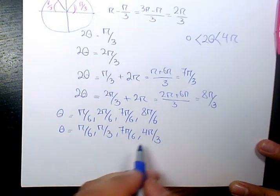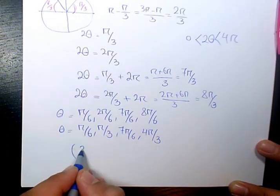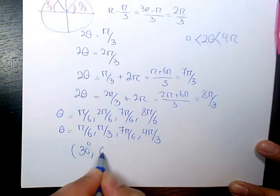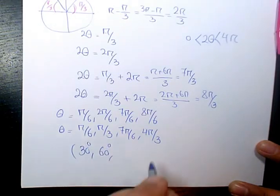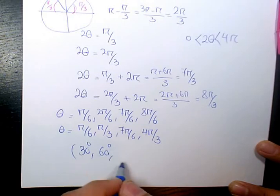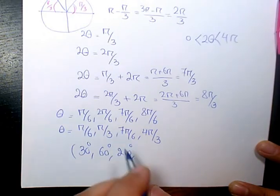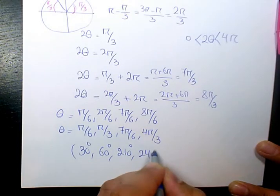So these are the answers in terms of radian. If you want to have it in terms of degrees, it's going to be 30 degrees, 60 degrees, 210 degrees, and also 240 degrees.